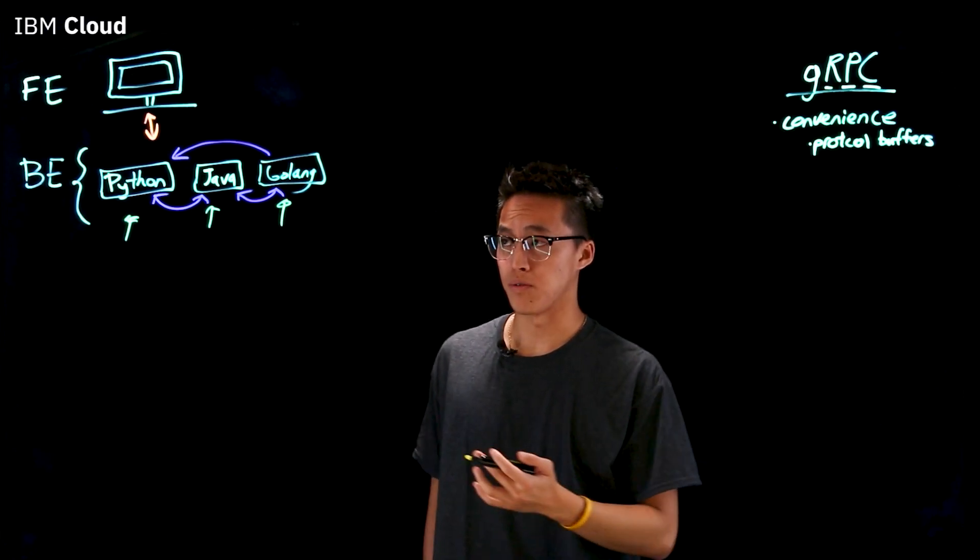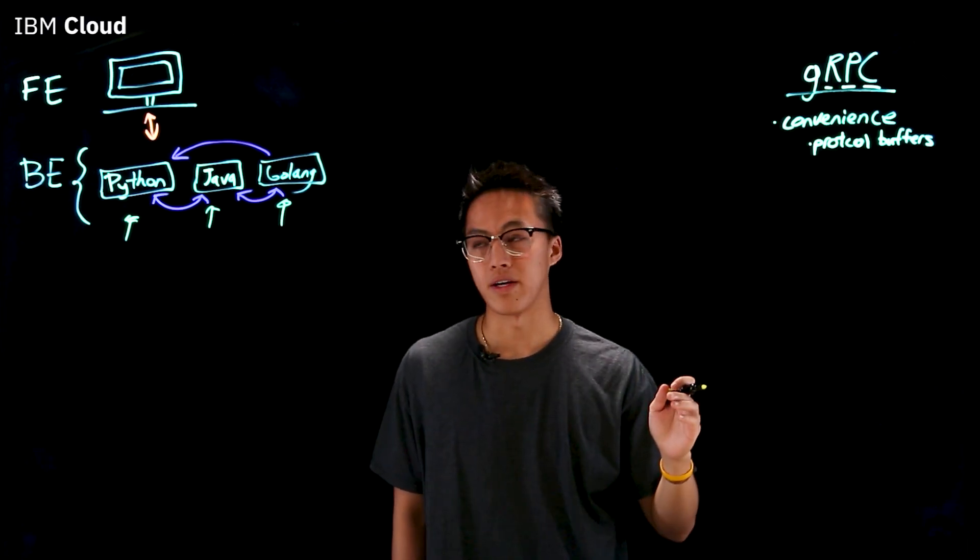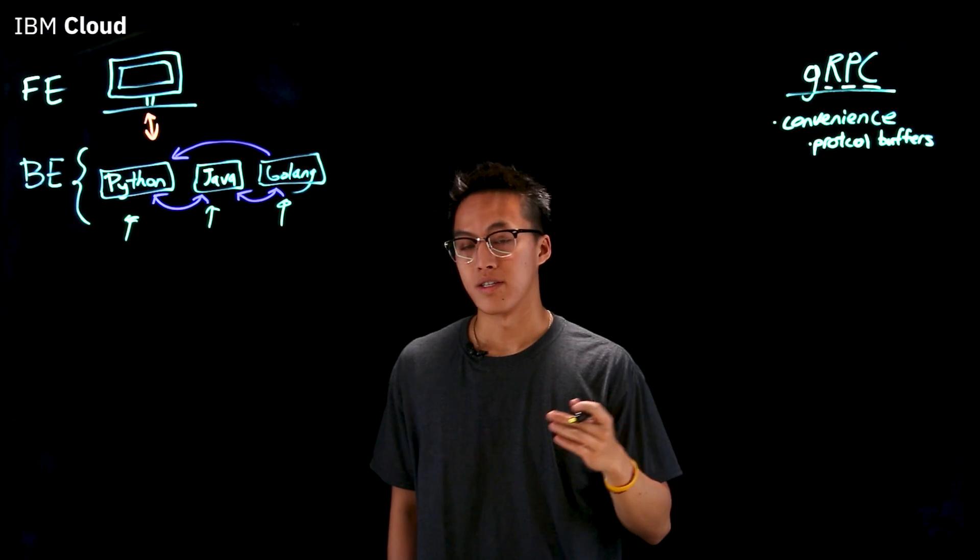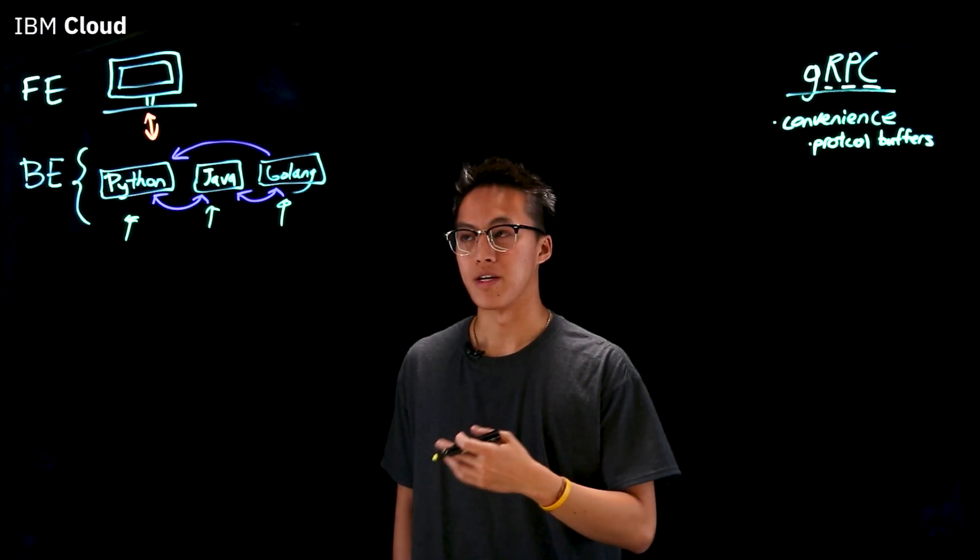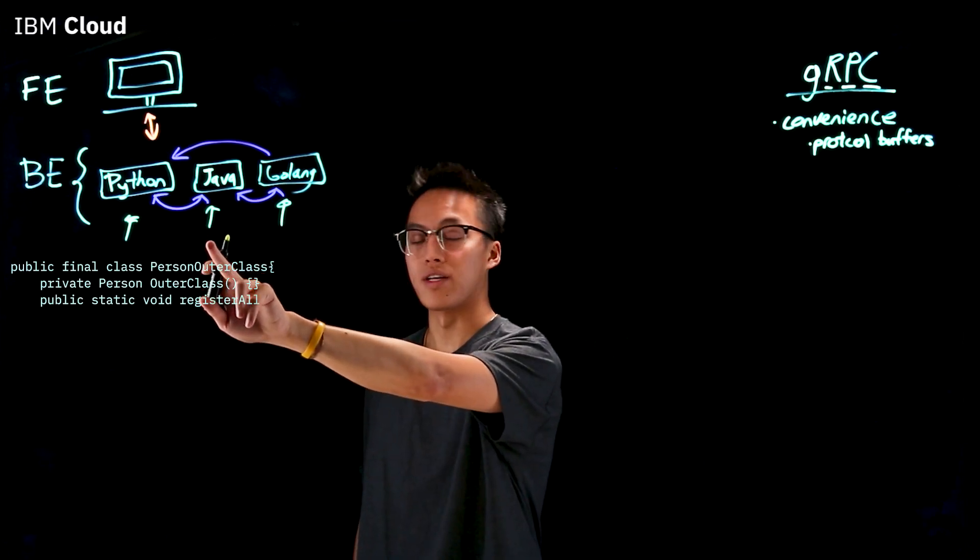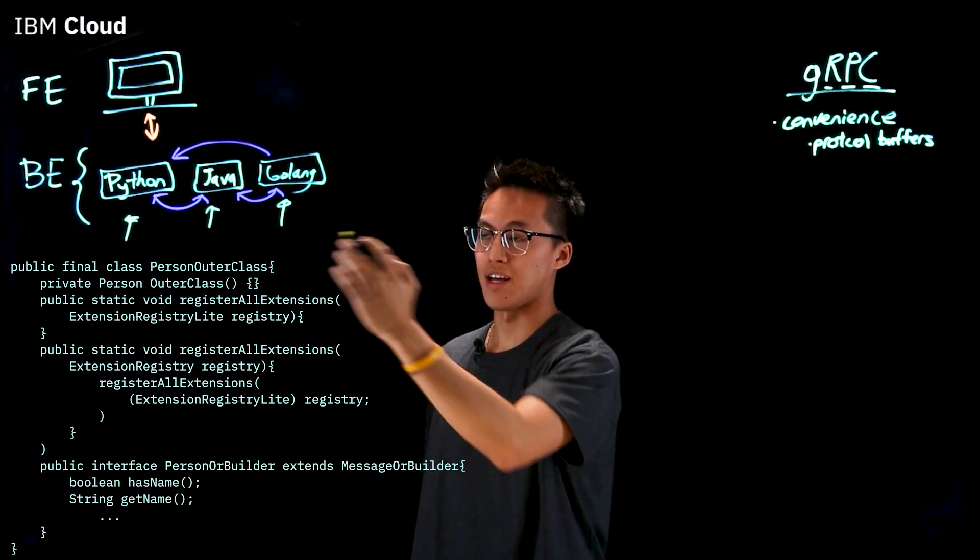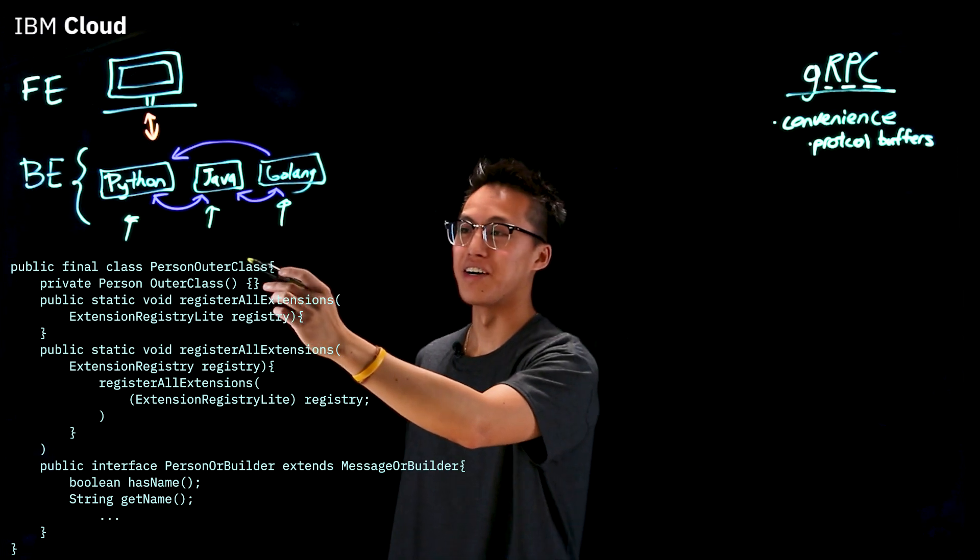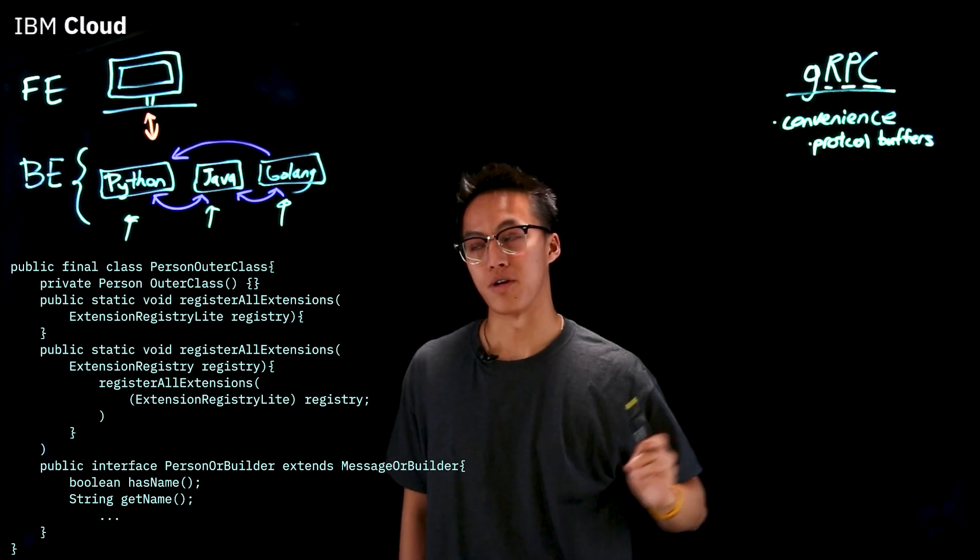So for example, if this was Java and you defined in your proto file that you're expecting messages to have three fields of type int, string, etc., what is output is essentially an interface that creates the classes for you that implements the object types that you outlined in your proto file.